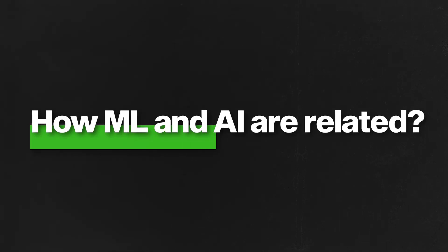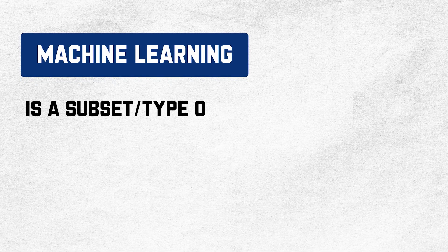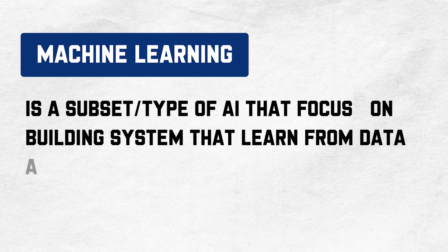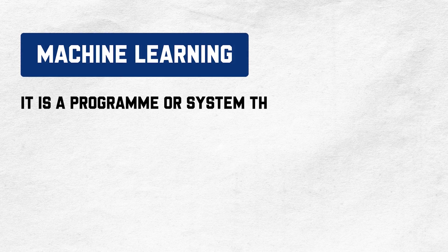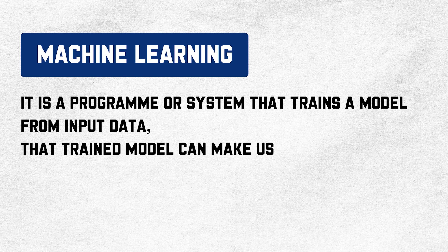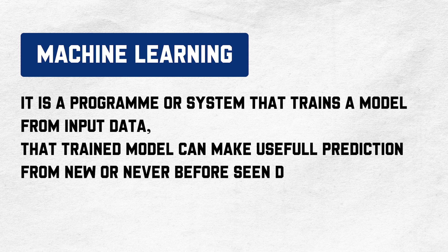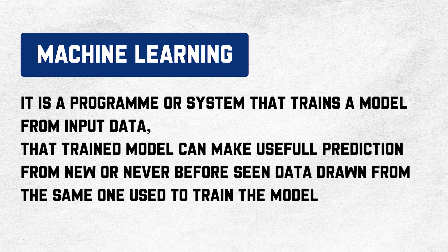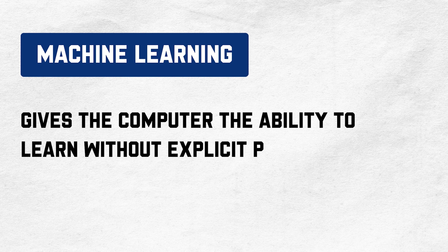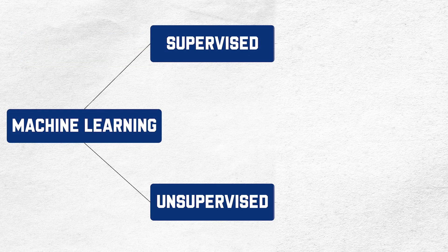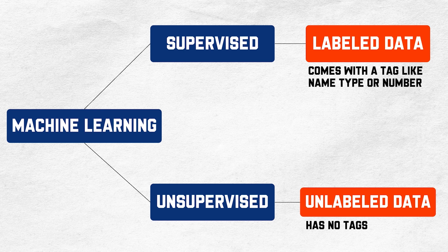What is machine learning and what does it have to do with AI? AI is a broad discipline — AI to computer science is similar to what physics is to science. Machine learning is a subset, or a type of AI, that focuses on building systems that learn from data and behave like humans. It is a program or system that trains a model from input data. That trained model can make useful predictions from new or never-before-seen data. Machine learning gives the computer the ability to learn without explicit programming, just like how humans learn. The two most common types of machine learning models are supervised and unsupervised. The key difference is that with supervised models, we have labels — labeled data comes with a tag like a name, a type, or a number.